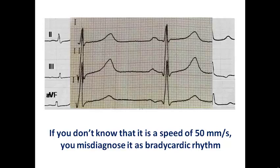Speed of 50 mm per second is not routinely performed. You ask for it specifically if, for example, you cannot identify the rhythm in cases of tachyarrhythmia or bradyarrhythmia and want to precisely diagnose the type of rhythm disorder. In that case, you may order the nurse for an ECG at 50 mm per second. So before interpreting the ECG, check that standardization is at 10 mm and speed is at 25 mm per second.